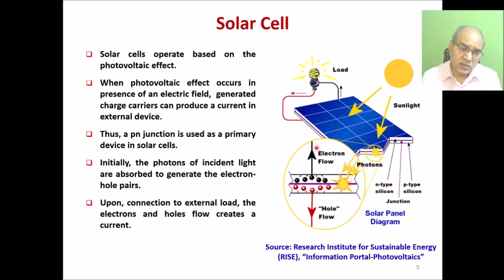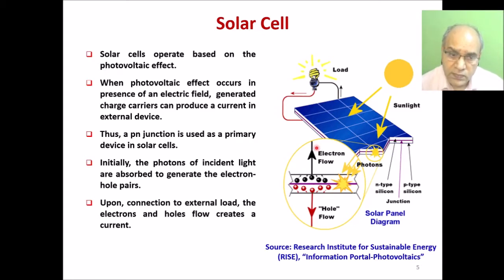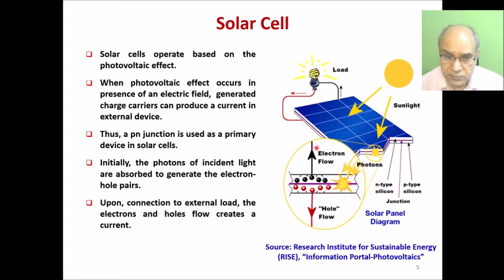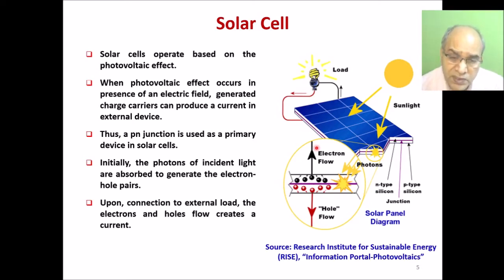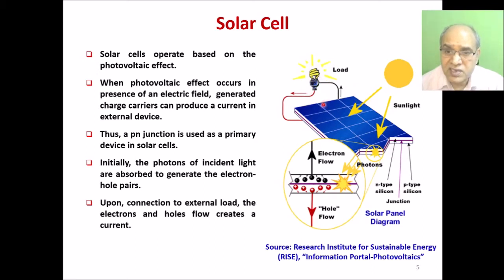The P-N junction is the primary device in the solar cell — it is the basic unit of the PV cell. The P-N junction is also the basic unit of all diodes, transistors, power diodes, power transistors, and power MOSFETs; it is the generic unit of all semiconductor devices. The whole idea is that light falls on the P-N junction, is absorbed to generate electron-hole pairs, and when an external load is connected, these form the total current and deliver electricity to the load.